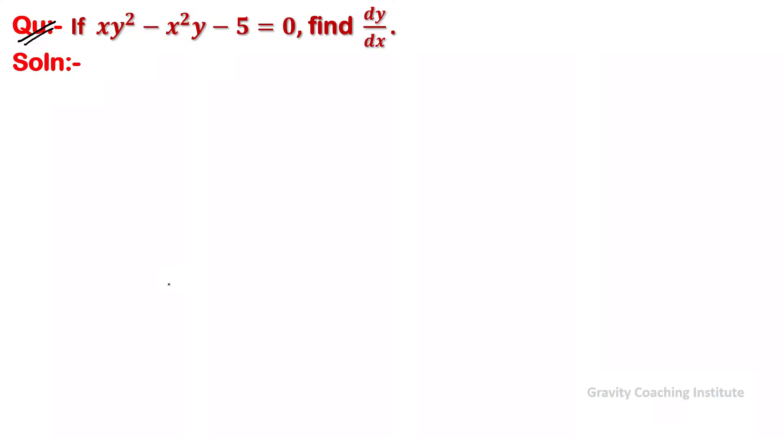The question is: if xy² - x²y - 5 = 0, find dy/dx. So here given xy² - x²y - 5 = 0. To solve this, we'll differentiate with respect to x.